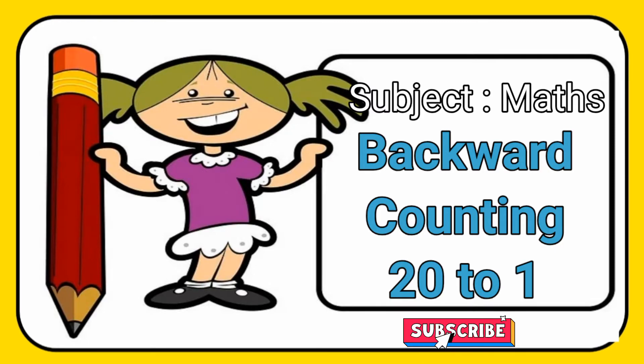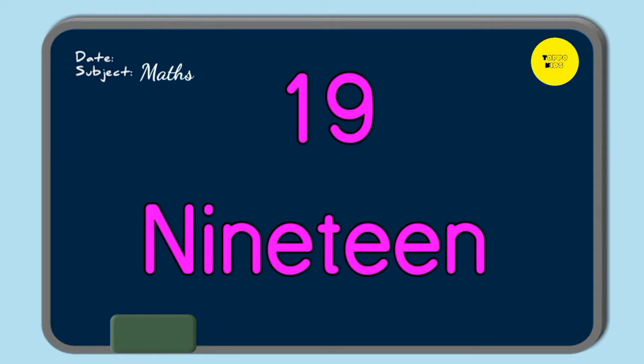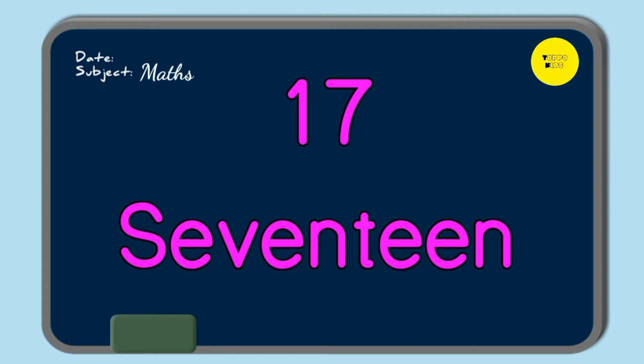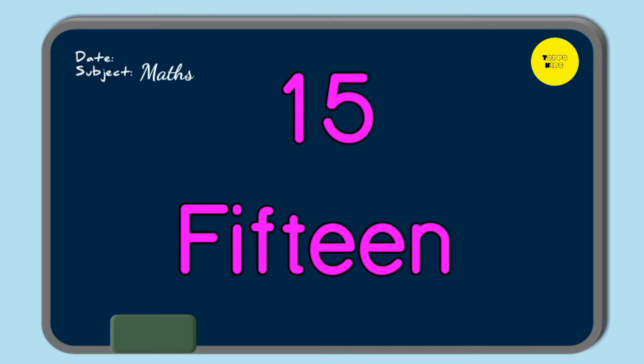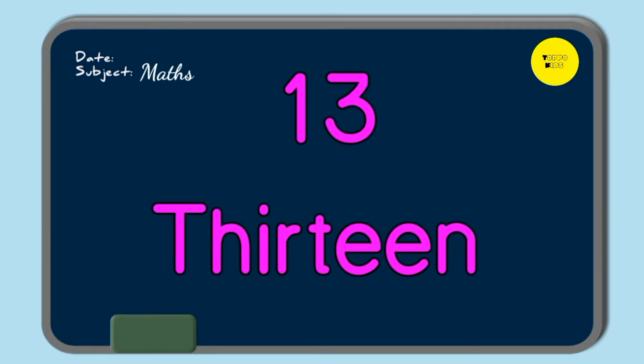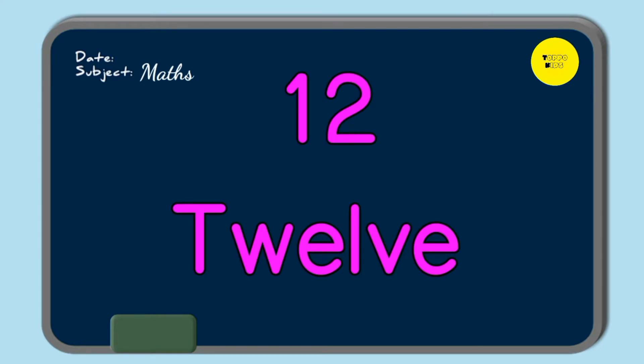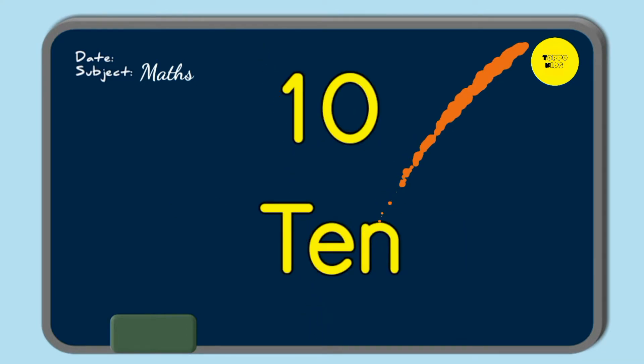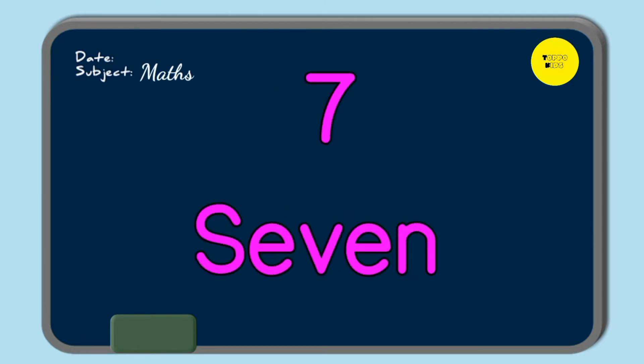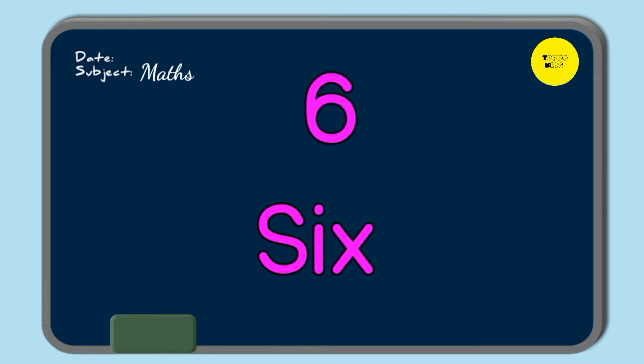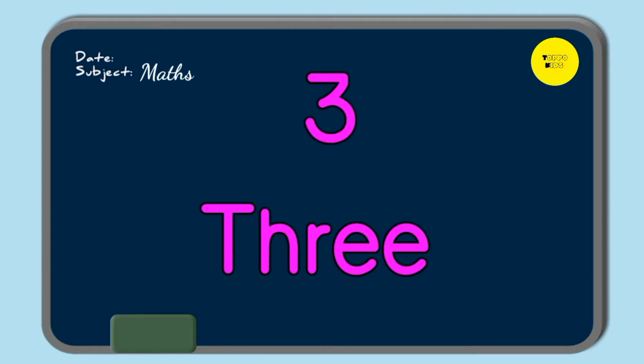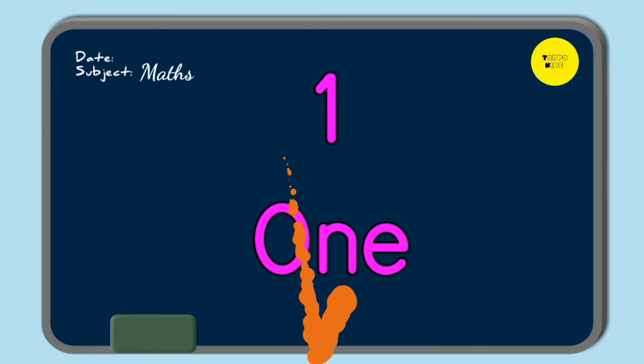Our second chapter is backward counting 20 to 1. So, repeat after me. 20, 19, 18, 17, 16, 15, 14, 13, 12, 11, 10, 9, 8, 7, 6, 5, 4, 3, 2, 1.